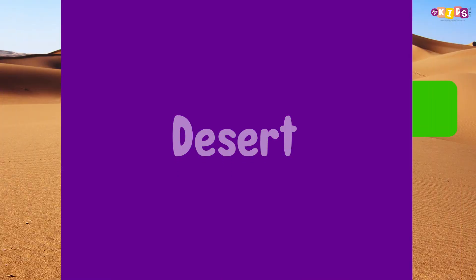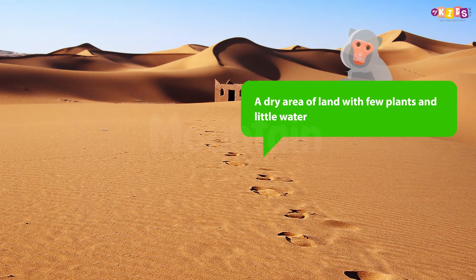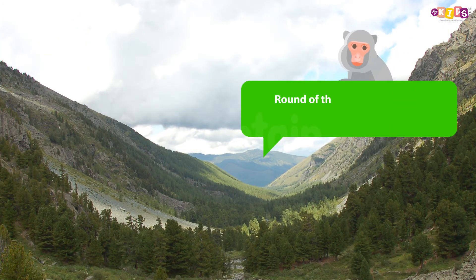Desert: a dry area of land with few plants and little water. Hill: a rounded area of land that is lower than a mountain.